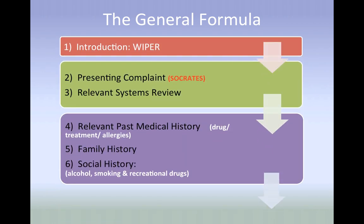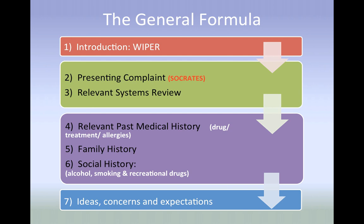Let's start off with the general formula. Every history comprises of these seven sections, not necessarily in this order. We start off with a clear introduction, which sets the scene of the consultation. Then the doctor must explore why the patient has come to see them today, including a relevant systematic review. The doctor will then delve deeper into the patient's past medical history, family and social history. Finally, and arguably the most important, the doctor must ensure that they have ICEd the patient — finding out what the patient seeks from this interaction and taking into consideration the patient holistically.